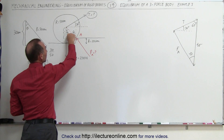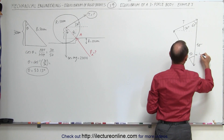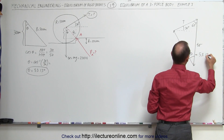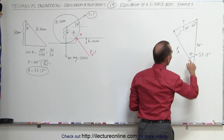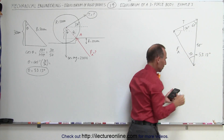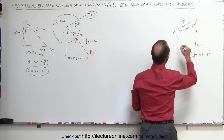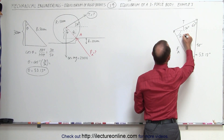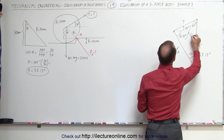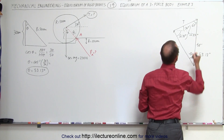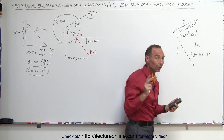So theta = 53.13 degrees, which is this angle here, the same as the corresponding angle in the diagram. That tells us the remaining angle in the triangle, which is 90 minus 53.13 = 36.87 degrees. Combined with the 30-degree tension angle, that gives an angle of 66.87 degrees. So now we have all three angles of the force triangle.